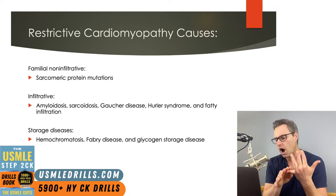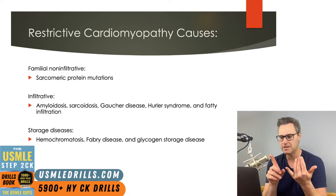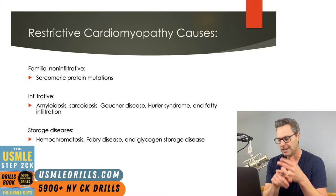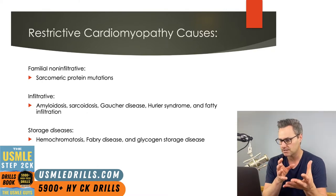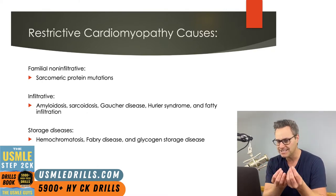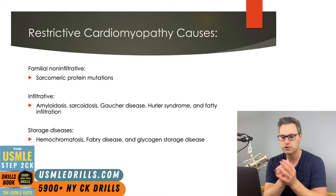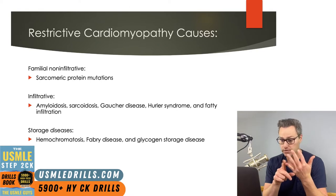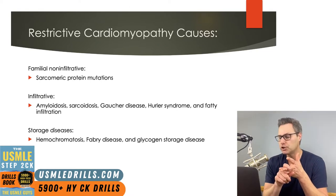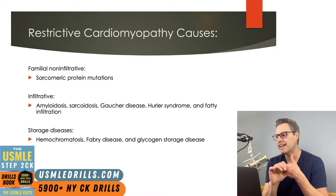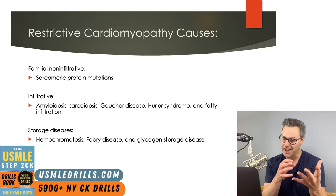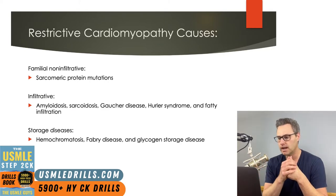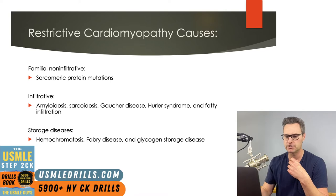Infiltrative diseases you would commonly encounter on the exam include amyloidosis and sarcoidosis, meaning you'd get amyloid deposits or granulomas present in the heart tissue. Storage diseases include hemochromatosis, Fabry disease, and glycogen storage diseases, where you'll see iron, glycophospholipids, and glycogen building up in the heart wall. This bridges genetics from Step 1 to understanding more complex clinical scenarios.